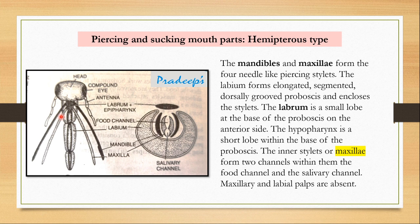In the red cotton bug or any hemipteran, the mandibles and maxillae form four needle-like piercing stylets. The labium forms an elongated segmented dorsally-grooved proboscis that encloses these four stylets. The two maxillae from each side are elongated to form needle-like stylets used to pierce plant tissue and suck liquid. When the two maxillae join together at the center, they form a salivary channel and a food channel.